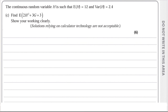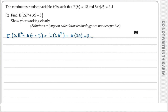Part c: the continuous random variable H has E(H) = 12 and Var(H) = 2.4. Find E(2H² + 3G + 3). This can be written as E(2H²) + E(3G) + 3, which equals 2E(H²) + 3E(G) + 3.